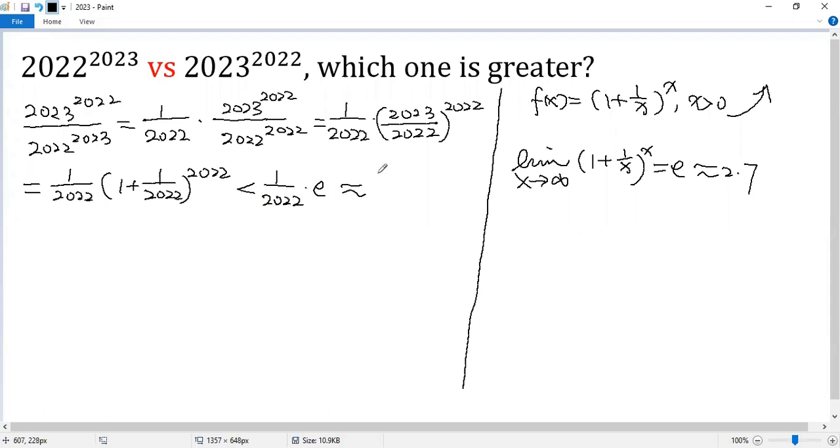So approximately, that's 2.7/2022, which is of course less than 1.